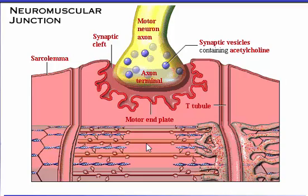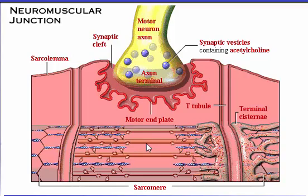The T-tubules are invaginations of the sarcolemma penetrating deep into the interior of the cell. The terminal cisternae are specialized regions of the sarcoplasmic reticulum that serve as reservoirs of calcium ions, shown here as red dots. Portions of the sarcoplasmic reticulum have been removed here in order to see the underlying structures. The sarcomere is the contractile unit of the muscle cell that extends from one Z-line to the next.